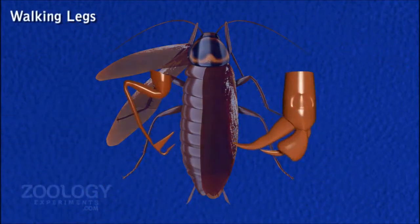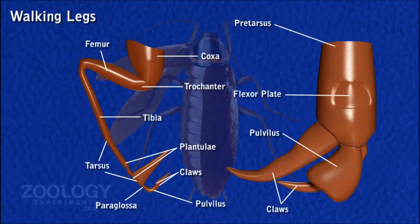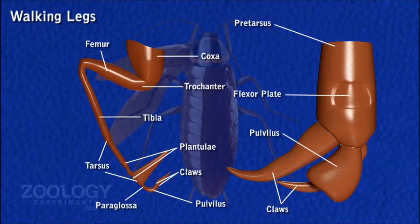Walking Legs. There are three pairs of walking legs, one pair attached ventrally to the sternum of each of the prothorax, mesothorax and metathorax. All the legs are similar and they consist of coxa, trochanter, femur, tibia, tarsus, planchulae, pretarsus, pulvillus and claws.